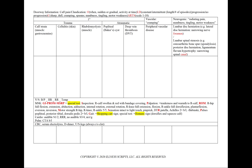We note aggravating and alleviating factors, radiation, treatments tried, and severity on a scale of one to ten. If there are no aggravating or alleviating factors or radiation, we'll also state that in our patient note to show we've asked. We'll break down calf pain into primary calf causes, vascular, or neurogenic. For all cases, we order a CBC, serum electrolytes, D-dimer, and an ultrasound of the legs, because we always want to rule out a clot.